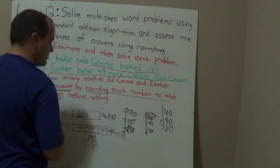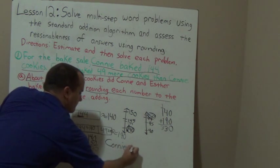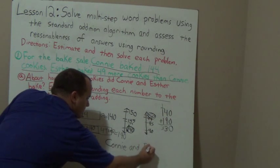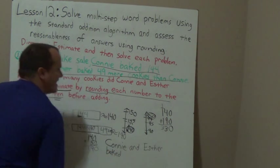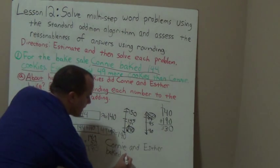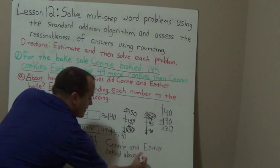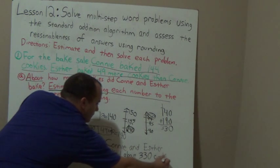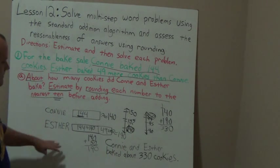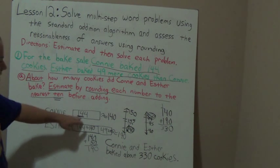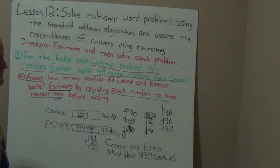I don't want to just write 'they' — I want to write their names so I know exactly who they are. So when I'm restating, I'm going to write: Connie and Esther baked about 330 cookies. And is it an exact answer? No, it's an 'about' answer — so I make sure I put the word 'about' because it's not exact. Go ahead and copy that down. We're making tape diagrams and finding out 'about,' that's why we have our squiggly equal sign. Take a minute to copy that down so we can get started on letter B.